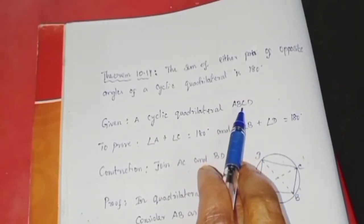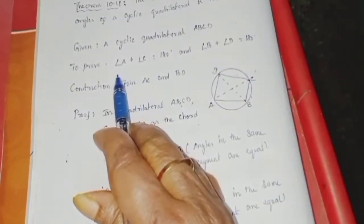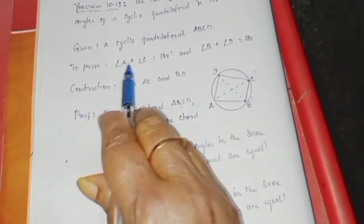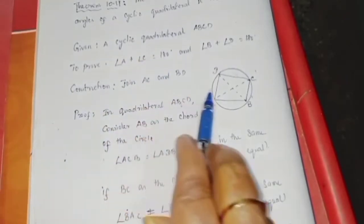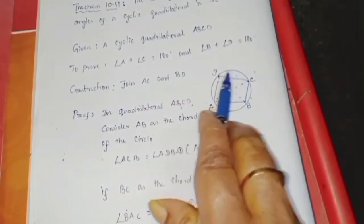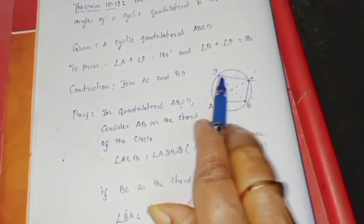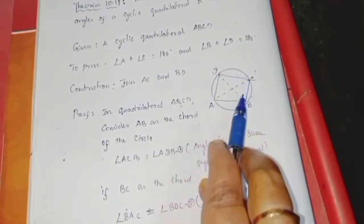A, B, C, D is a cyclic quadrilateral. To prove: angle A plus angle C is equal to 180 degrees. Here is the circle with the cyclic quadrilateral having 4 vertices.